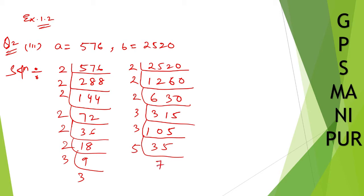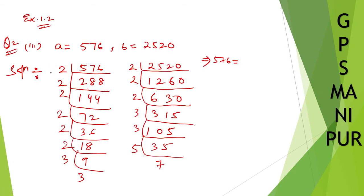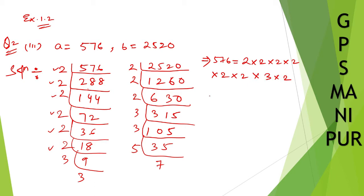Now we can write down the prime factorizations. For 576: how many 2s are there — 1, 2, 3, 4, 5, 6 — so 576 equals 2 × 2 × 2 × 2 × 2 × 2 × 3 × 3. For 2520: 2520 equals 2 × 2 × 2 × 2 × 2 × 3 × 5 × 7.